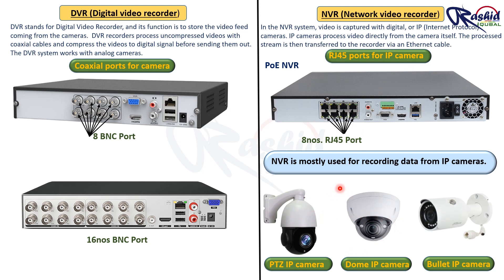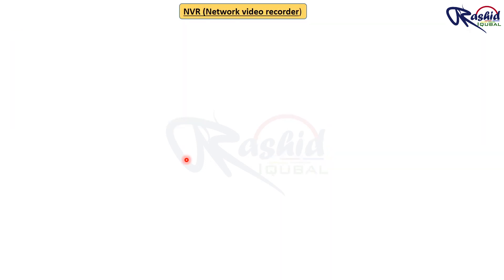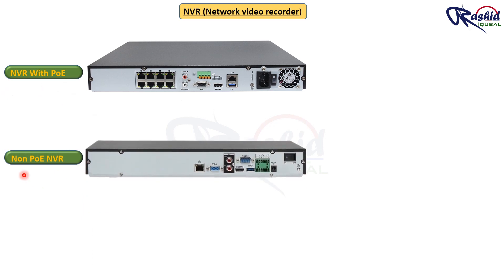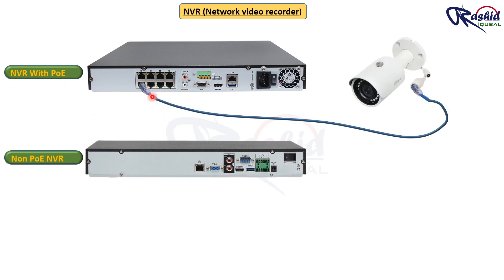The processed stream is then transferred to the recorder via an Ethernet cable. There are two types of NVR available: the first is PoE-NVR and the second is non-PoE-NVR. A PoE-NVR recorder can deliver both data and power over a single Ethernet cable. There is no need for an additional PoE switch — you just need to connect one Ethernet cable from the camera to the PoE-NVR recorder, and the built-in switch will provide power to the camera while transmitting data.